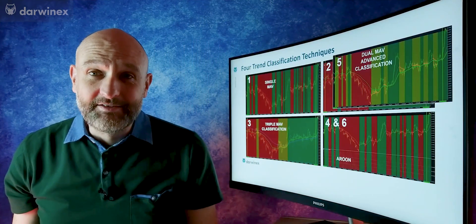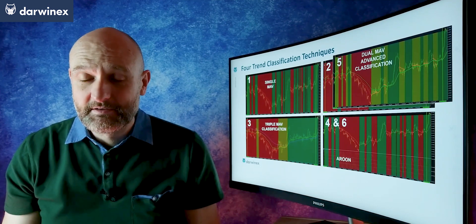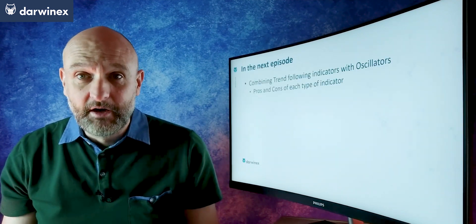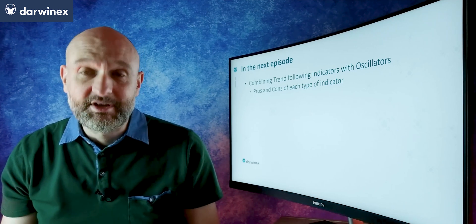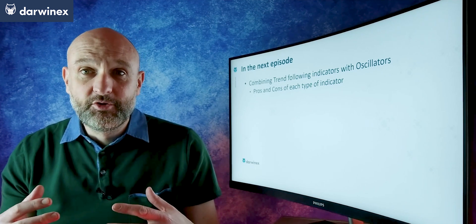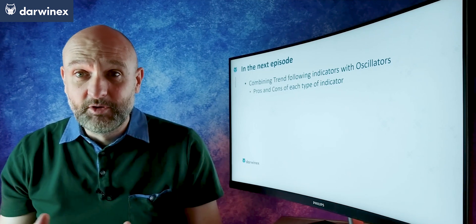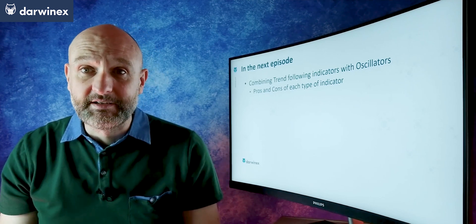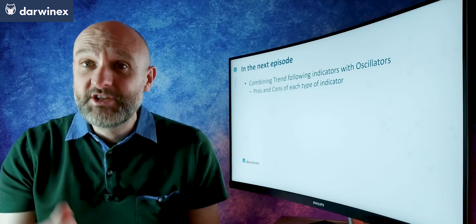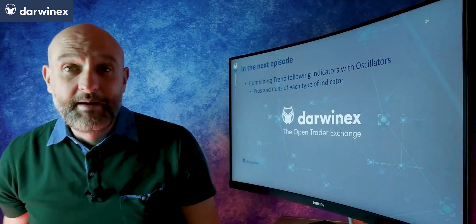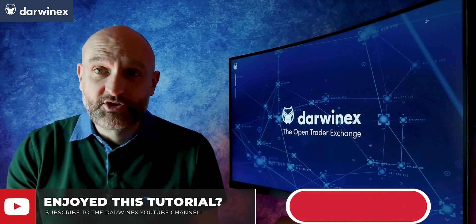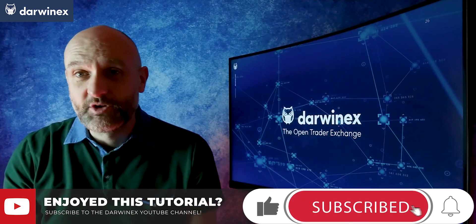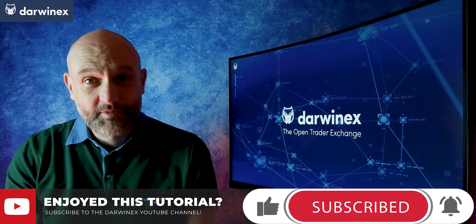We've almost come to the end of this indicators mini-series, with just a couple more episodes. In the next, we're going to look at how to bring together oscillators and trend-following indicators to combine them into a trading system, looking in detail at the pros and cons of each type of indicator and how to put each to best use. Please remember to give a like if you've got value from today, and if you're not already familiar with DarwinX, click the link below to find out more. Until next time, trade safe.